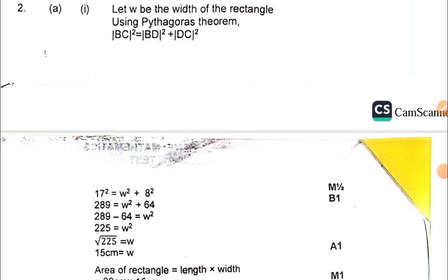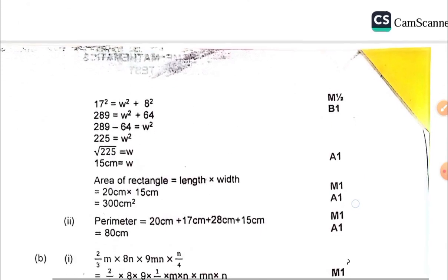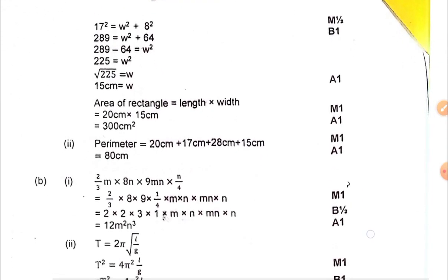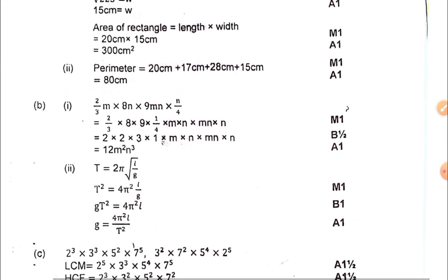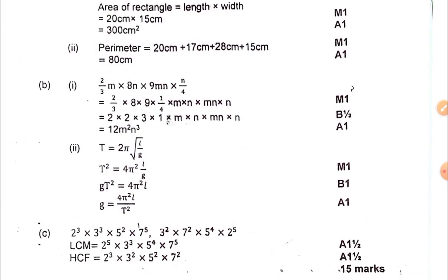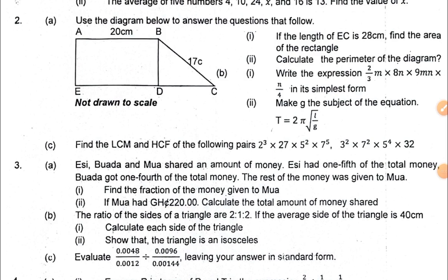For question two, you have to use Pythagoras theorem, then find the perimeter as well. Part B has to do with expressing in simplest form, then B(ii) has to do with change of subject, making the variable the subject. Then part C, finding the LCM and then the HCF.